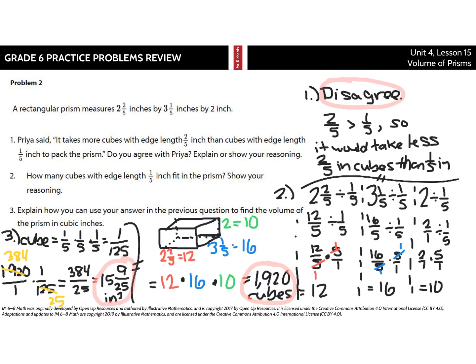Question 2 is a complicated one. A rectangular prism measures two and two-fifths inches by three and a fifth inches by two inches. Prius said it takes more cubes with edge length two-fifths inch than cubes with edge length one-fifth to pack the prism. Do you agree? Well I don't, I strongly disagree. If a cube has an edge length of two-fifths that's going to be bigger than the edge length of one-fifth, so since two-fifths is bigger than one-fifth it would take less of the two-fifths inch cubes than one-fifth. I mean much less.